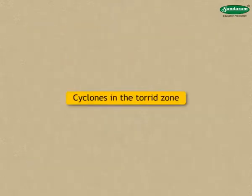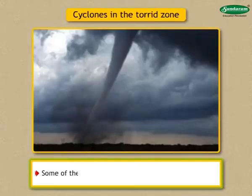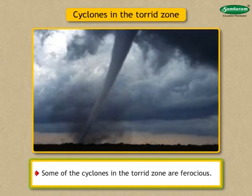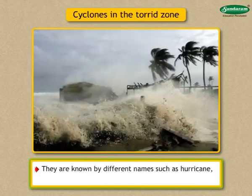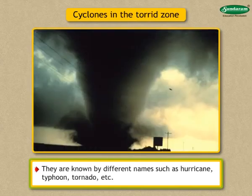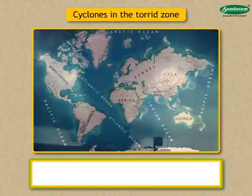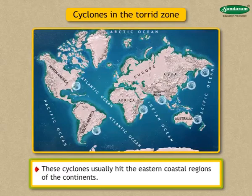Cyclones in the torrid zone. Some of the cyclones in the torrid zone are ferocious. They are known by different names such as hurricane, typhoon, tornado, etc. These cyclones usually hit the eastern coastal regions of the continents.